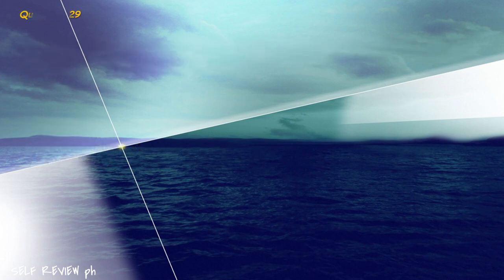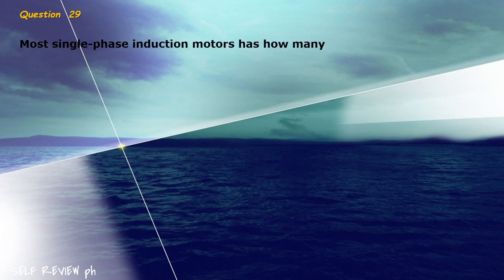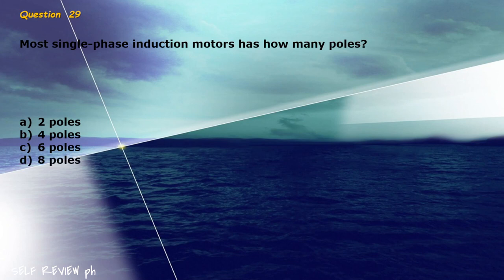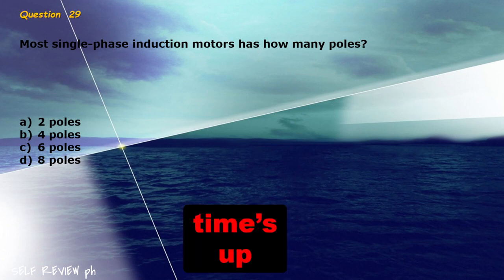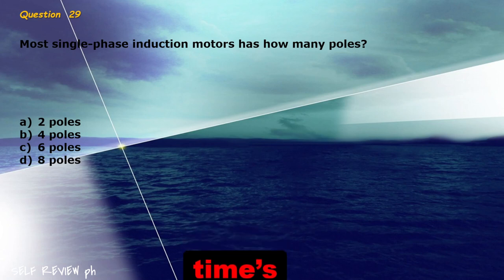Question 29: Most single phase induction motors has how many poles? A) 2 poles, B) 4 poles, C) 6 poles, D) 8 poles. The correct answer is letter B, 4 poles.